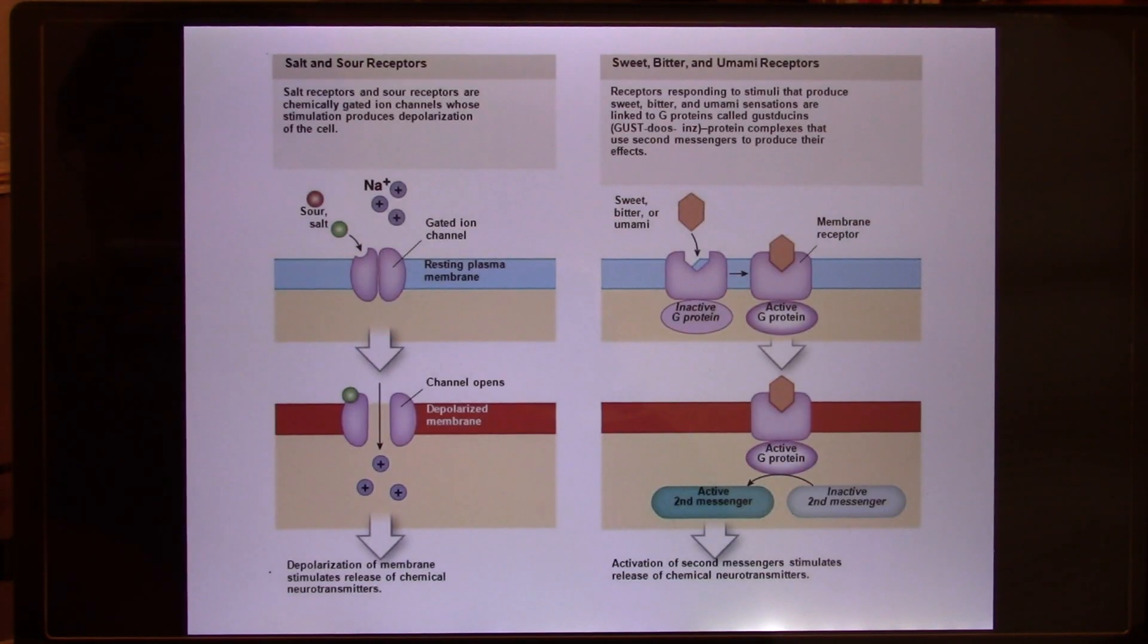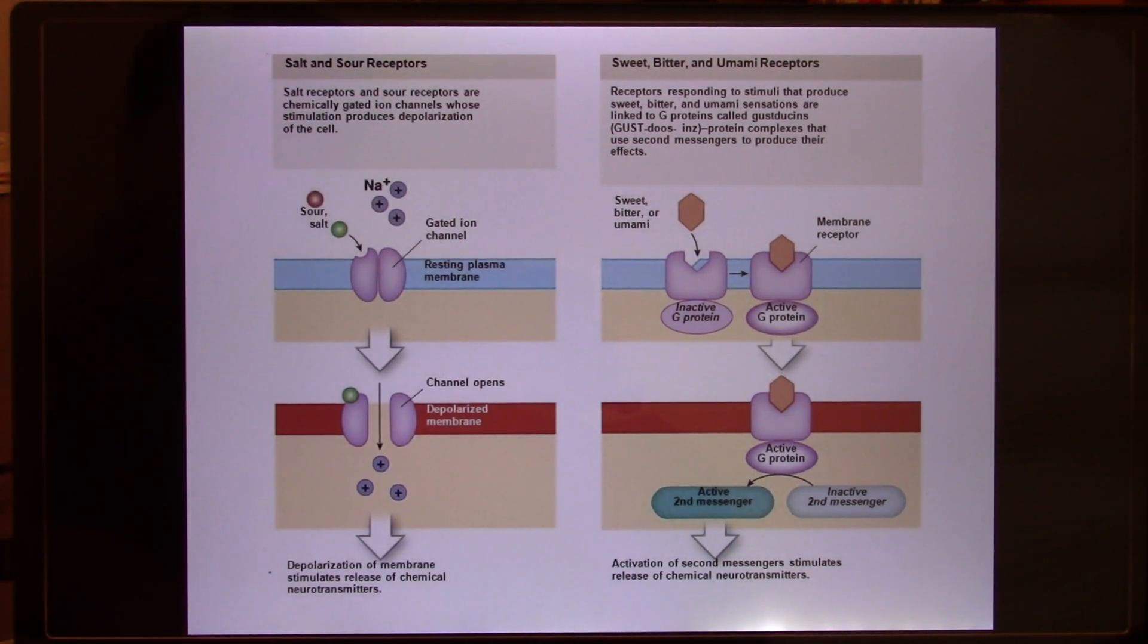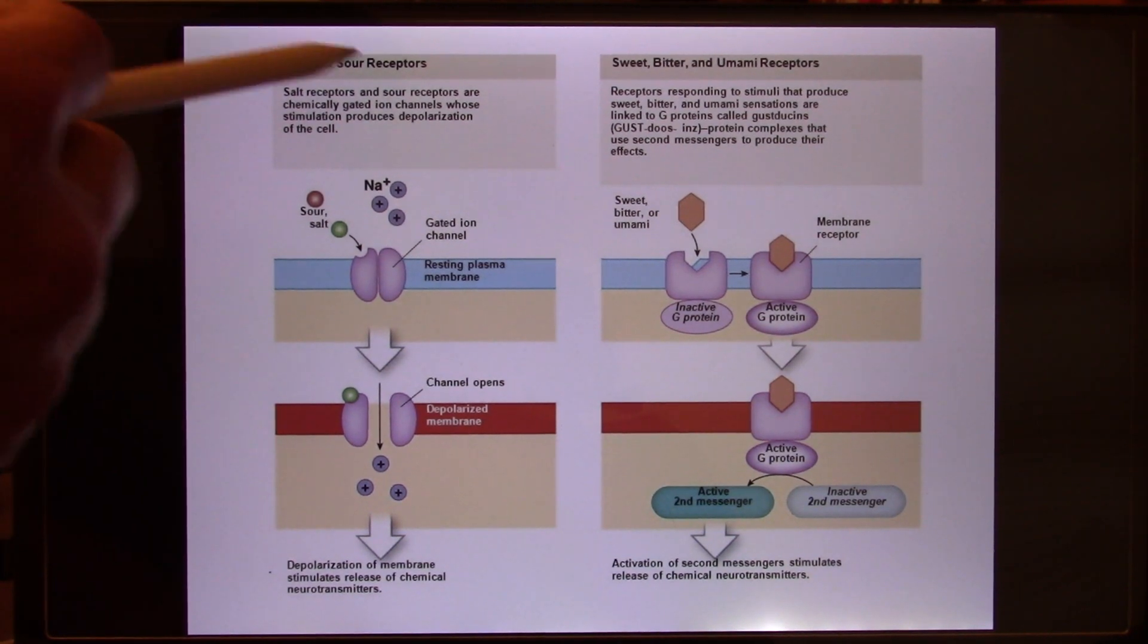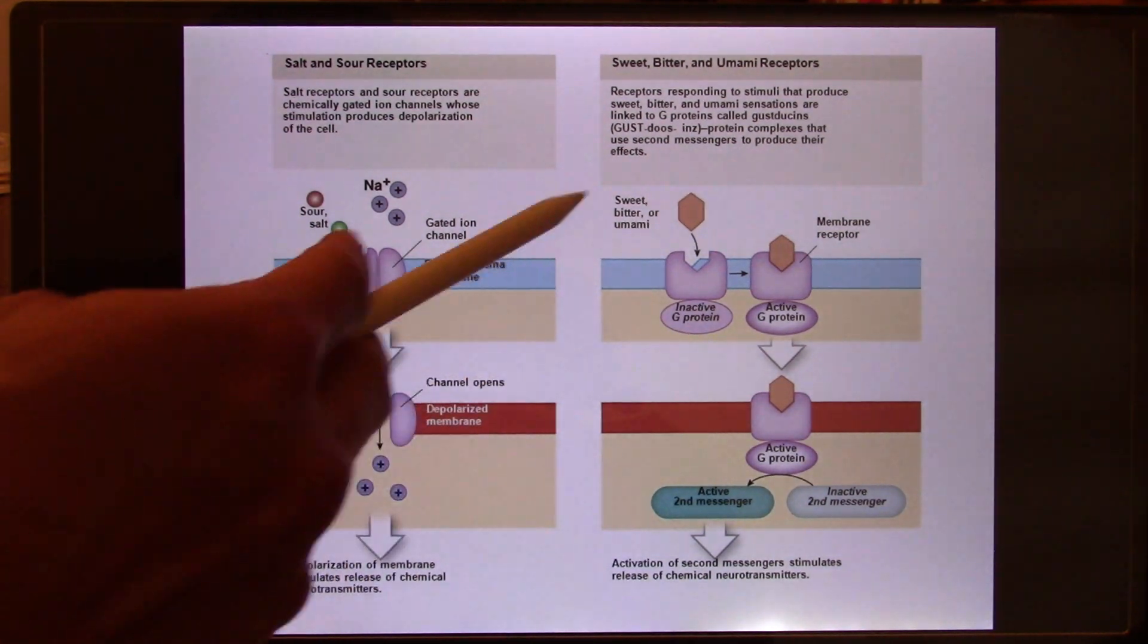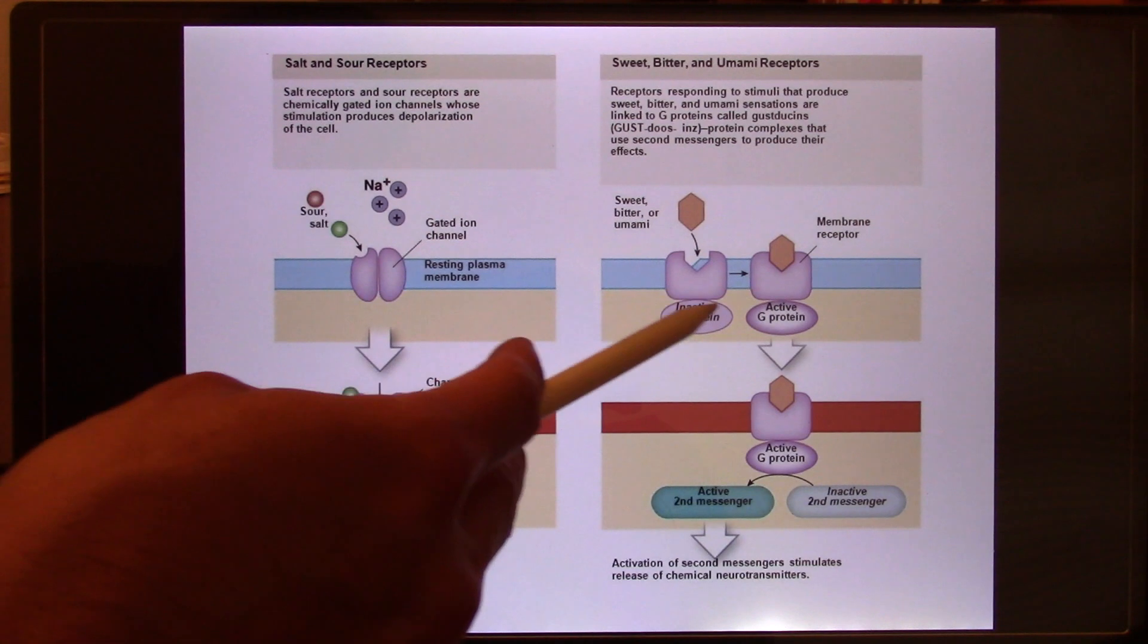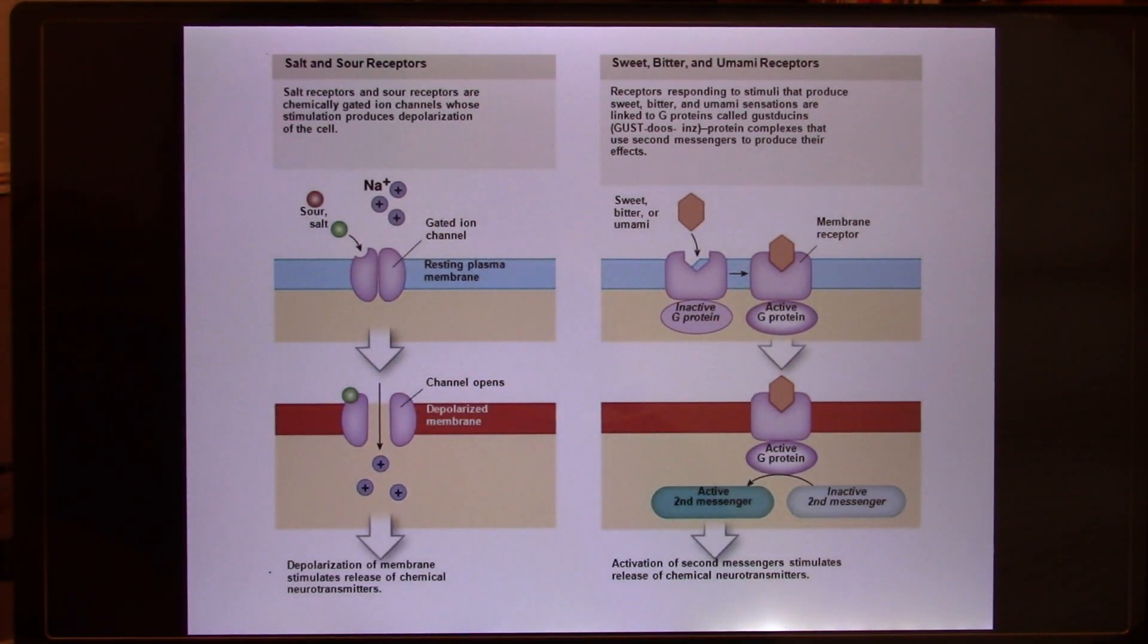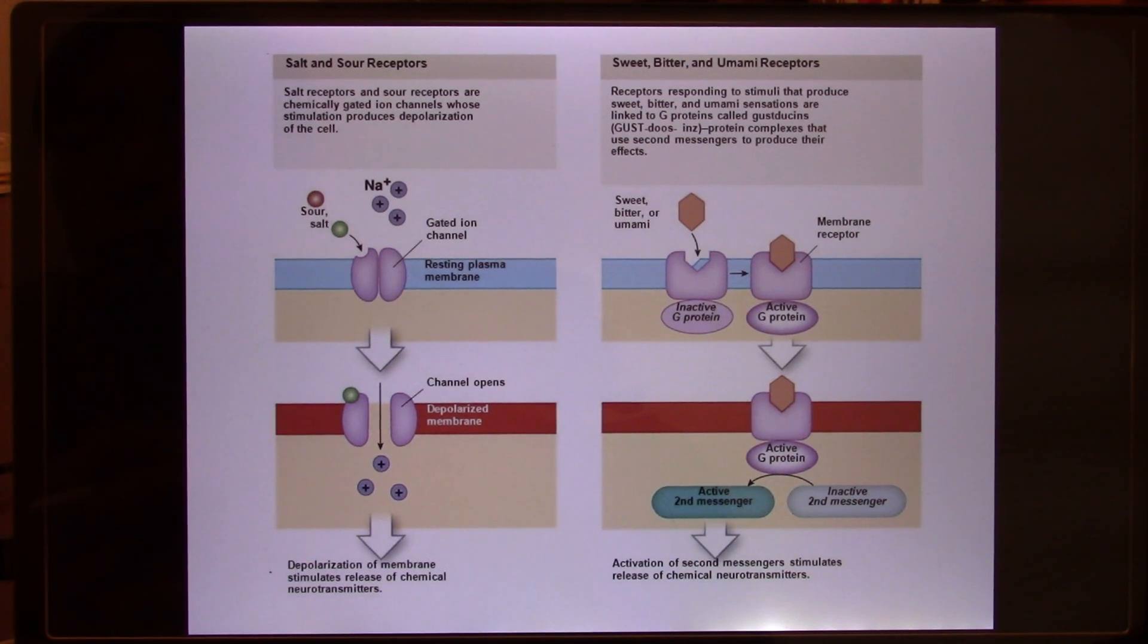And for the sweet, so the salty and the sour, they use the ion channel. For the sweet, bitter, umami, these are the chemical molecules. Like umami is glutamate. And sweet, bitter, these are chemical molecules. So they need to have a G-protein coupled receptor. And they still have the outside part. They bind with the signal. And the inside part, they will activate the G-protein, activate the second messenger. And don't even know what the second messenger is. Could be cyclic-AMP or the other second messenger system. And eventually translate the signal. That's how little we know about the flavor.